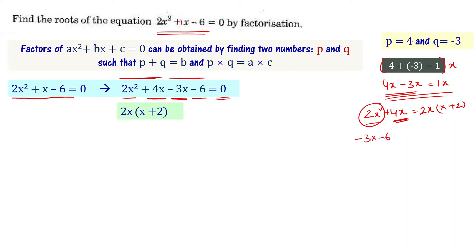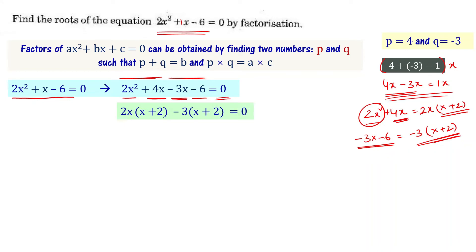Now for the remaining terms -3x - 6, taking out -3 as common factor gives -3(x + 2). So the equation becomes 2x(x + 2) - 3(x + 2) = 0. Both terms have (x + 2) as a common factor. Taking (x + 2) out, we get (x + 2)(2x - 3) = 0.